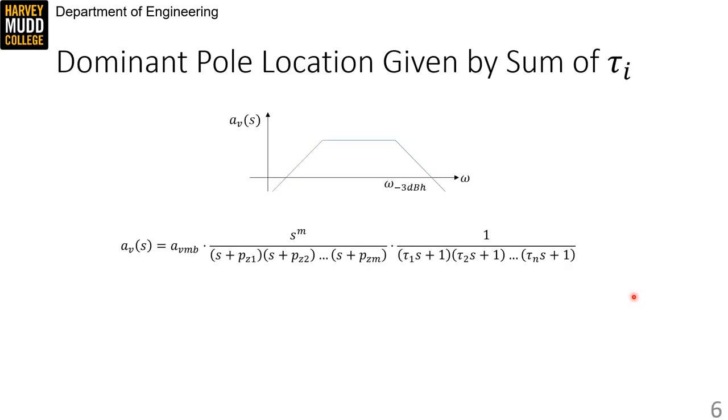Open circuit time constants, or OCTC, are a circuit feature that is part of a bandwidth estimation technique which was invented at MIT in the 1960s. Bandwidth estimates made with OCTC have nice properties like being conservative and granting intuition about which capacitors are slowing a circuit down.